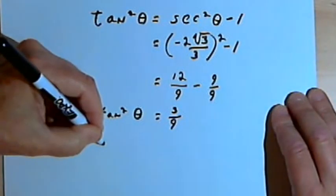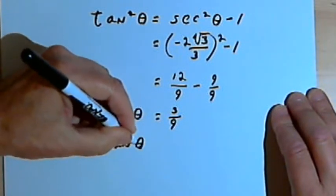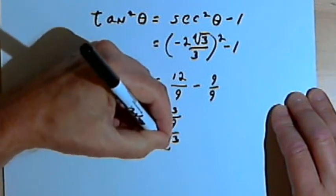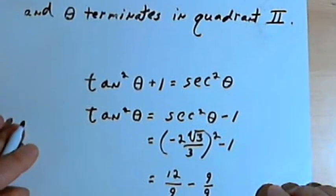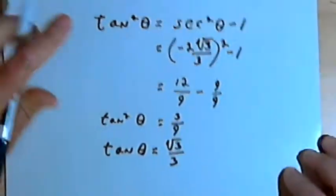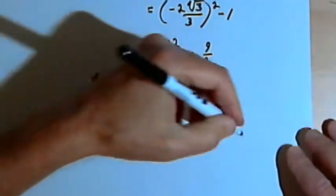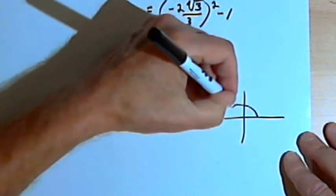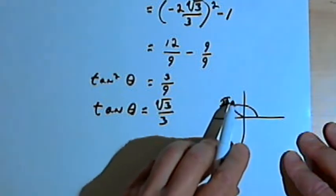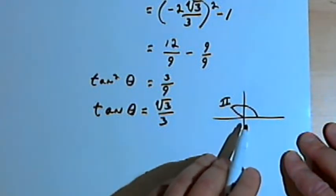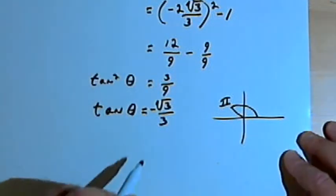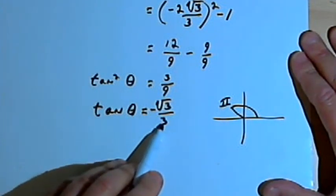We take the square roots of both sides: the tangent of theta equals the square root of 3 over 3. Theta terminates in quadrant 2, where tangents are negative because the y values are positive and the x values are negative. So the tangent of theta is going to be negative square root of 3 over 3.